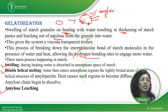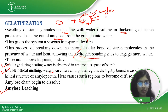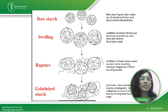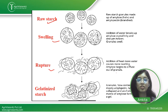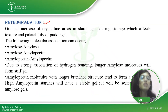Gelatinization occurs in three steps. Step one is swelling: due to heat, water gets entrapped into the amorphous starch structure. Step two is double helical melting: as water enters, the tightly bound double helical structure of amylopectin gets disrupted and diffused, and amylose chains begin to dissolve. Step three is amylose leaching. In the diagram, raw starch granules, upon addition of water and heat, rupture to form gelatinized starch with leached amylose.